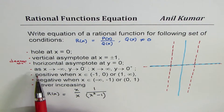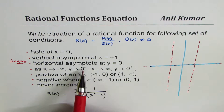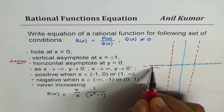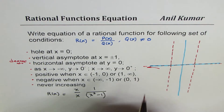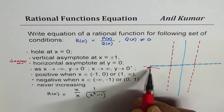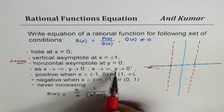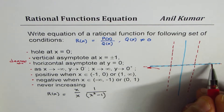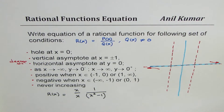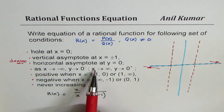Now for end behavior: as x approaches negative infinity, y approaches 0 from below — the curve comes in from underneath. As x approaches positive infinity, y approaches 0 from the positive side — the curve approaches from above. That is the end behavior derived from the given conditions.